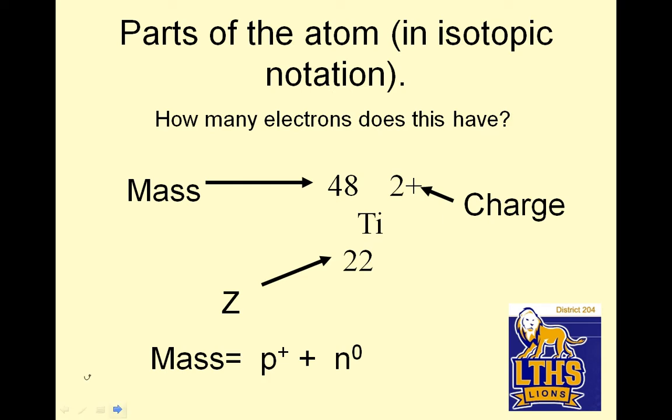Parts of the atom in isotopic notation. How many electrons does this have? We did the other parts. So if here's the charge, remember Z is the atomic number, and it's different for every element. And if you have a +2 charge, that means you have more protons than electrons. So if I have 22 protons, then I must have 2 fewer, or 20 electrons. Remember, the mass is protons plus neutrons, and Z is the atomic number, which is the number of protons.